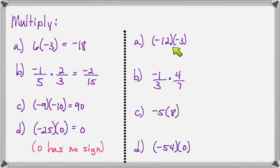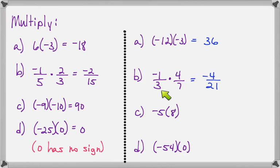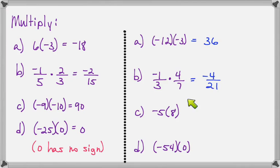Negative 12 times negative three makes positive 36. Negative one-third times four-sevenths: negative one times four makes negative four, and three times seven makes 21, giving negative four over 21. Negative times positive still makes negative. Negative five times eight makes negative 40, and anything times zero makes plain zero.